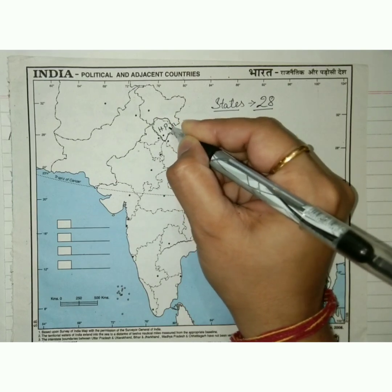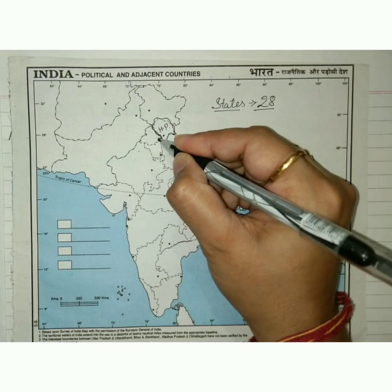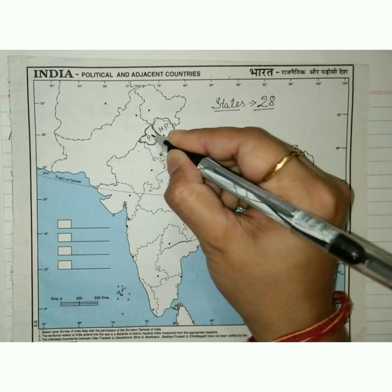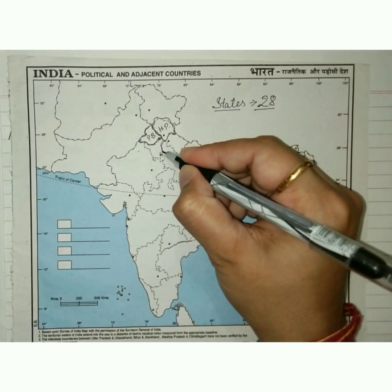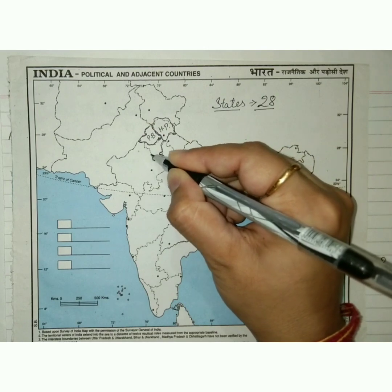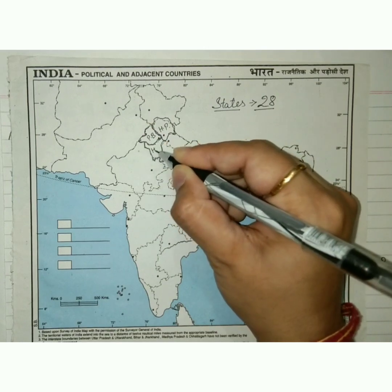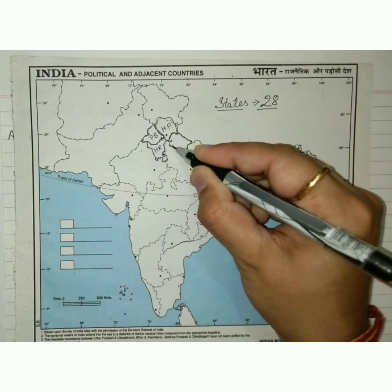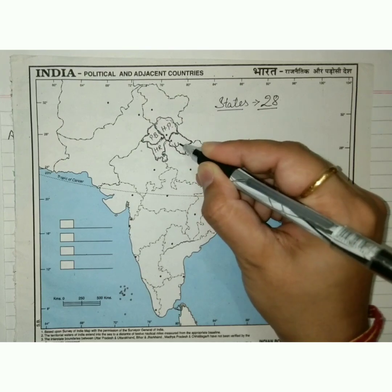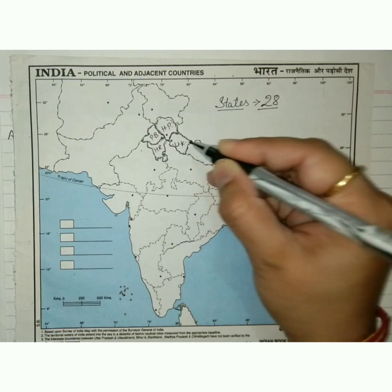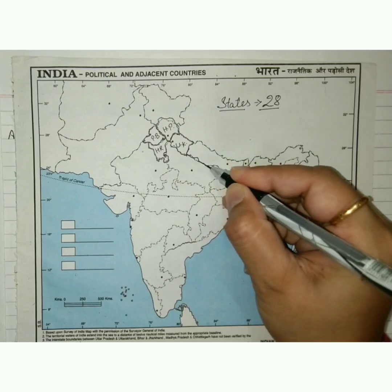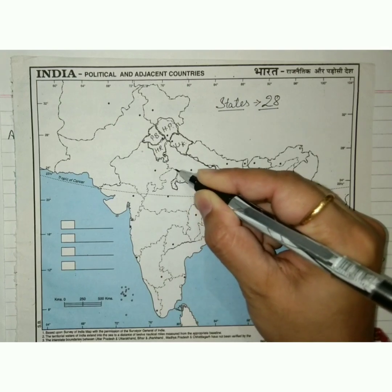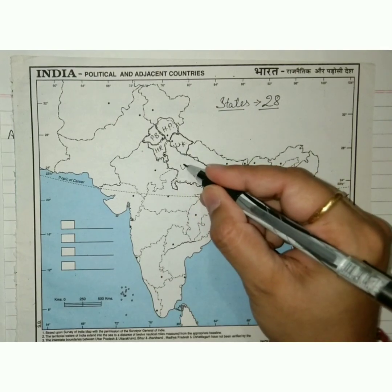This is Himachal Pradesh. This is Punjab. This is Haryana. This is Uttarakhand. This is the boundary of Uttar Pradesh.